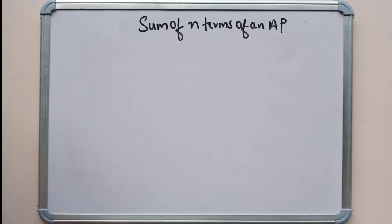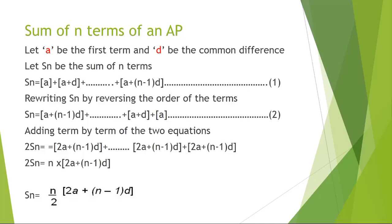Next, we are going to learn about the sum of N terms of an AP. Let A be the first term and D be the common difference. Let Sn be the sum of N terms. Sn equals A plus (A plus D) plus (A plus 2D) plus (A plus 3D) plus ... plus (A plus (N minus 1) into D).